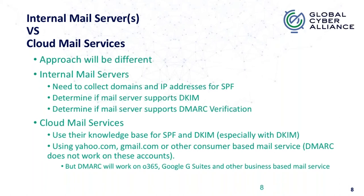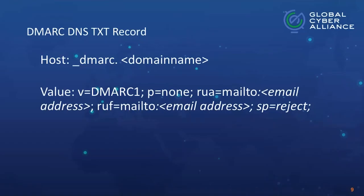DMARC will work on Office 365 and Google G Suite because you are in control of your domain — you're applying a domain to a business-based email service. To get started right away, create a TXT record in your DNS with a host called underscore DMARC (in some cases, underscore DMARC dot your domain name). Set the value with version equals DMARC1 and a policy level of none, so no mail is impacted while you do the analysis.